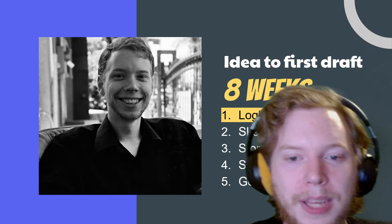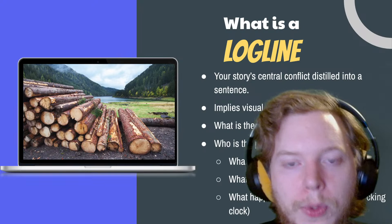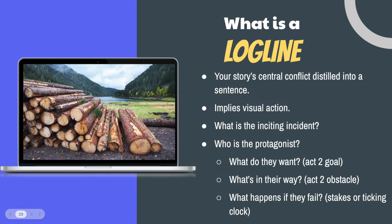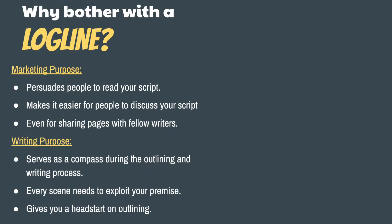Let's continue to look at loglines in more detail. The logline is your story's central conflict distilled down into one sentence. We want to imply visual action — that this is a story about people doing stuff, not sitting around thinking or discussing. Discussion is a red flag for lack of adequate conflict. If the whole movie is just people sitting around discussing things, something is probably off. Make sure your idea has conflict really baked into it. We want to know what starts the story off — that's the inciting incident. The template is: When or after [inciting incident], an [adjective] protagonist must [conflict] before [stakes].